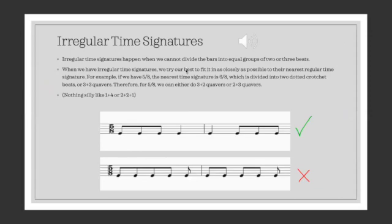Irregular time signatures. They happen when we cannot divide the bars into equal groups of two or three beats. Generally, there's not a lot of rules in how they are grouped, and we'll talk about grouping in more detail later on, but for grade five, generally the irregular time signatures are five-eight, five-four, and then seven-eight, and seven-four.